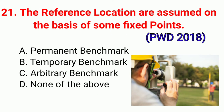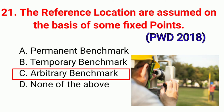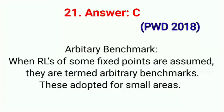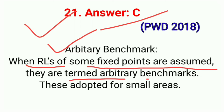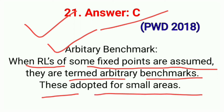Question No. 21. The reference locations are assumed on the basis of some fixed points — correct option C: Arbitrary Benchmark. When reduced level of some fixed points are assumed, they are termed Arbitrary Benchmark. These are adopted for small areas. Correct option C.